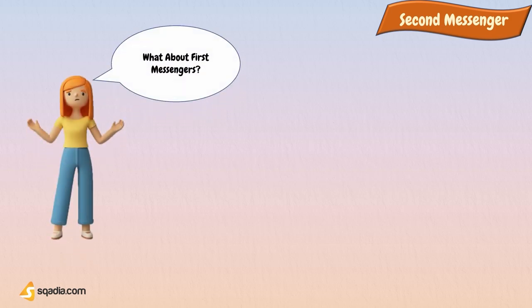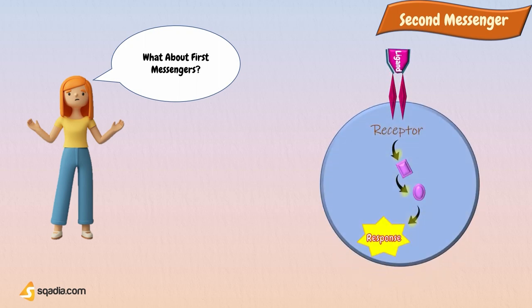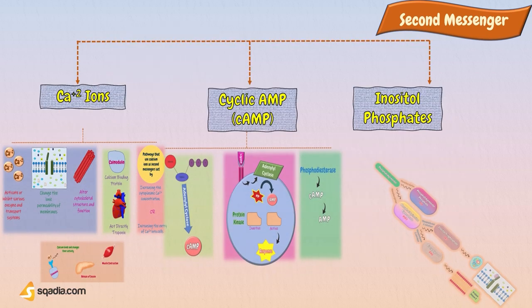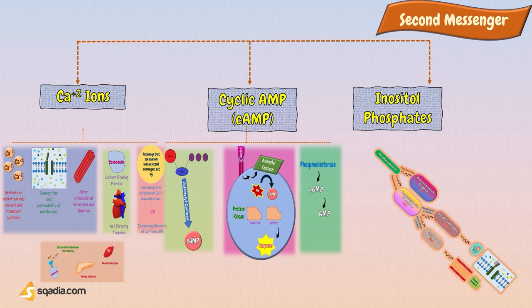Now let's move on to the topic of second messengers. You may be wondering: did I miss the first messengers? The first messengers are the ligands that bind to the receptor. Second messengers are small, non-protein molecules. They are called second messengers because they pass along a signal initiated by the binding of a ligand — the first messenger — to its receptor. Second messengers include calcium ions, cyclic AMP, and inositol phosphates.